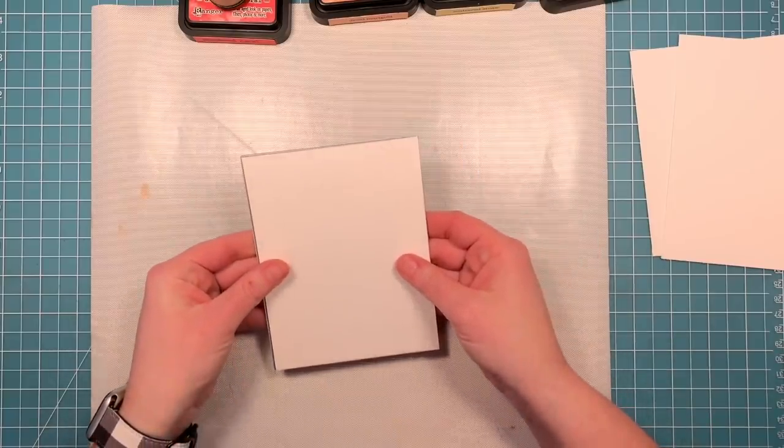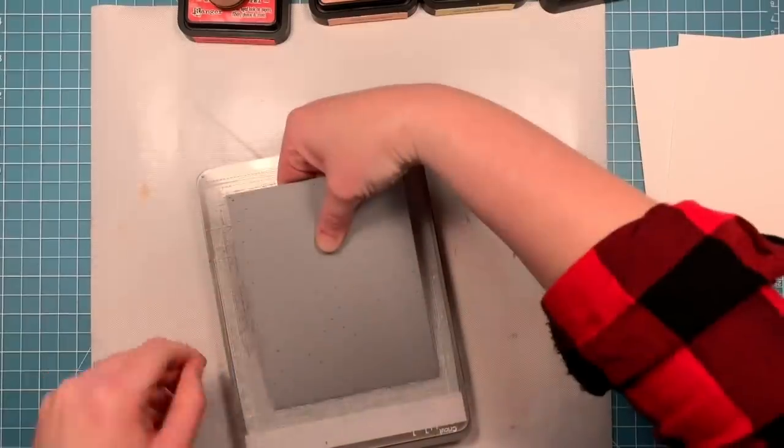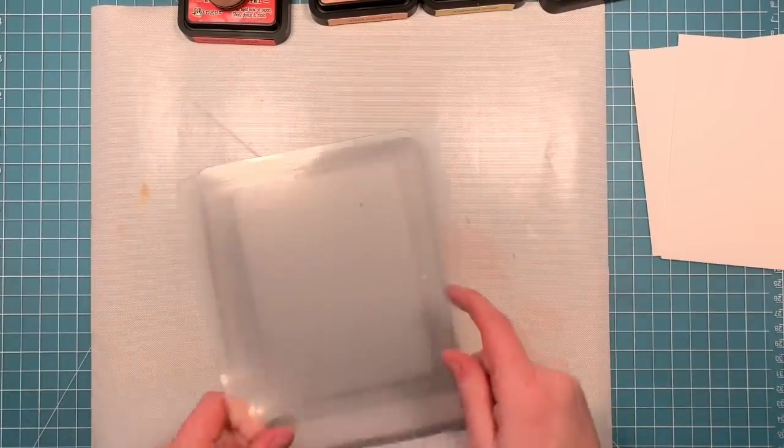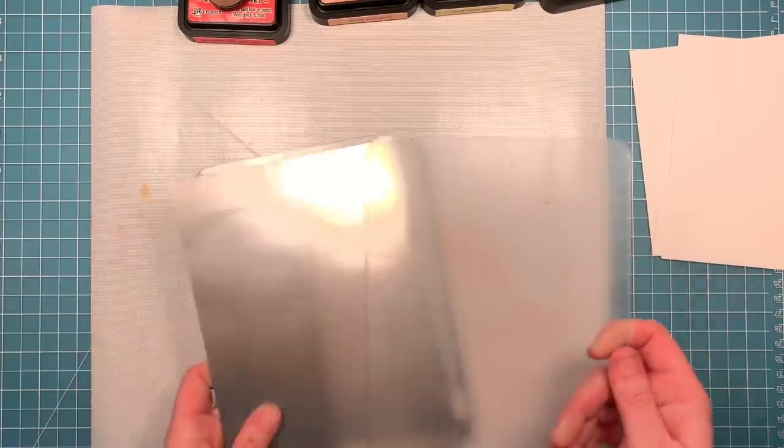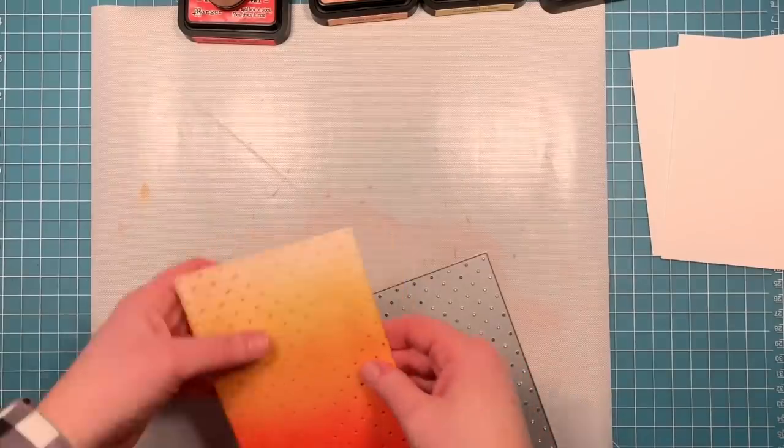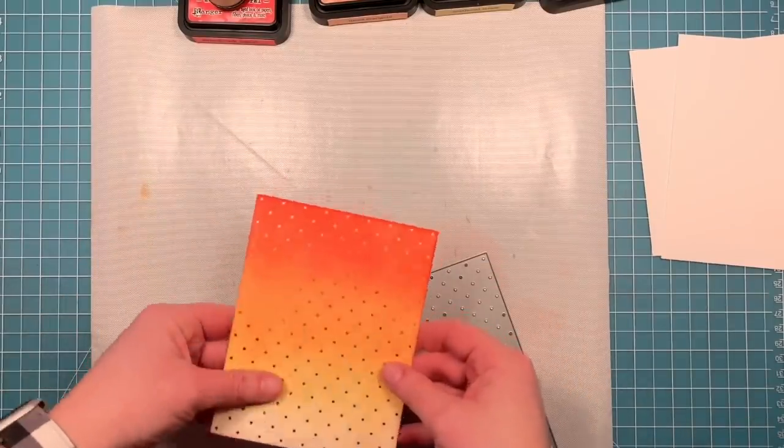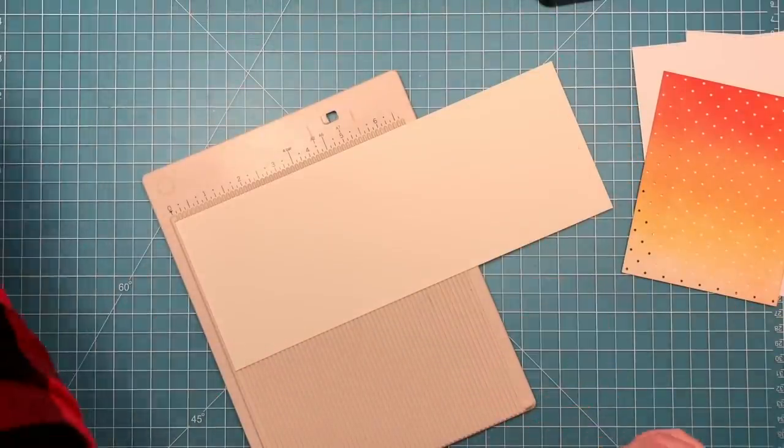Now I'm going to use the polka dot backdrop die and I'm going to cut this piece that I've blended. I like to use my metal shim when I do background dies like this because I make sure that it gets cut through the center very well. That's usually where I have trouble with my background dies.